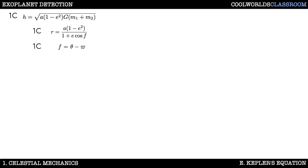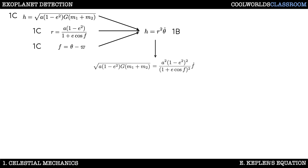Let's start with the three equations we obtained in video C: the specific angular momentum h, the radial distance r, and the true anomaly f. We also know from Kepler's second law that h equals r squared multiplied by theta-dot, which we covered in video B. Plugging the three equations into the right, and noting that since the longitude of pericenter is a constant, theta-dot equals f-dot, we obtain the following.